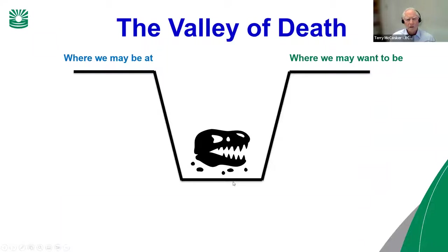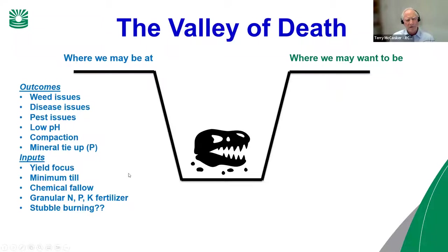Why don't we get significant changes? Why isn't everybody doing this? Particularly in the cropping industries, it's to do with what I call the 'valley of death.' There's a place where we are and a place where we want to be, but we perceive that at the bottom of this valley of death there are crocodiles that will consume us if we misstep on the way over.